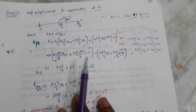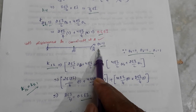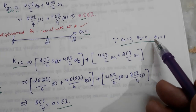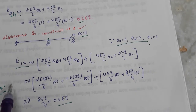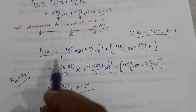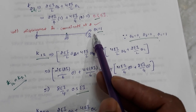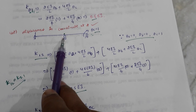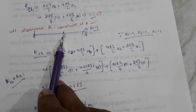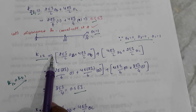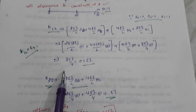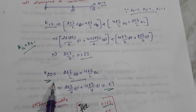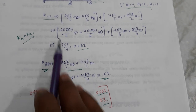For coordinate two, we apply theta-c equals one with theta-b equals zero. We check the response at positions one and two. K12 is the force at position one due to unit displacement at position two. K22 is obtained by applying load at position two and checking displacement at position two.